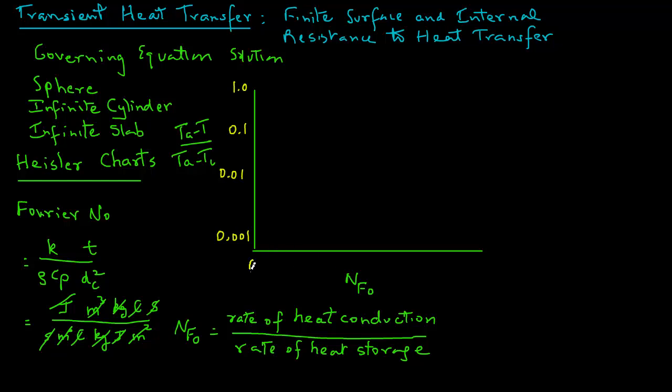Whereas, the x-axis is on a regular scale for Fourier number. So, we have 0, 1, 2, 3, and so on.